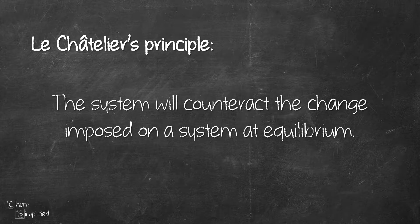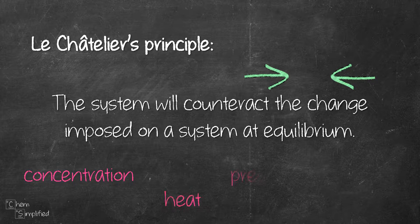Once the system reaches dynamic equilibrium and something happens to the system, it will respond by increasing either the forward or the reverse reaction in order to get back to equilibrium. This could be something like increasing or decreasing the concentration of a substance, heating or cooling the system, or changing the pressure or volume of the reaction vessel. I'll refer to these types of changes as stress on the system. Let's look at how the system will respond to each of these stresses.